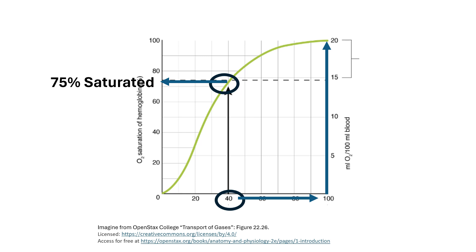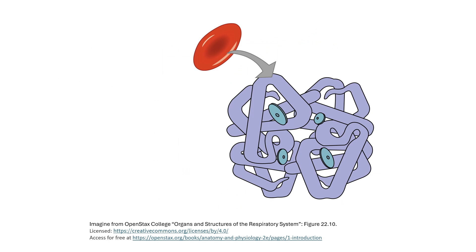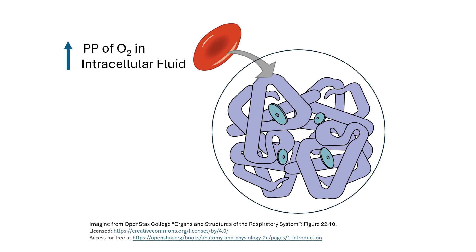However, if we can drive the partial pressure of oxygen within the blood plasma and thus the intracellular fluid of the red blood cell up to 100 millimeters of mercury, then hemoglobin will go from being 75% saturated to close to 100% saturated. Increasing the partial pressure of oxygen within the intracellular fluid causes the hemoglobin protein to conformationally shift, and that shift causes an increase in hemoglobin's affinity for oxygen — meaning it causes hemoglobin to bind more oxygen when you drive up the partial pressure of oxygen within the intracellular fluid of the red blood cell.